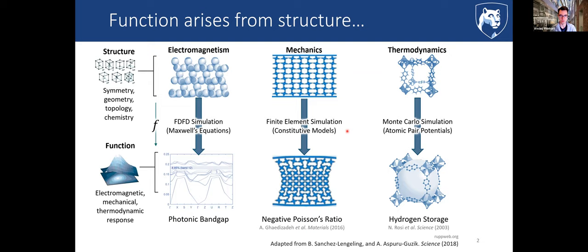For mechanics, we use finite element simulations or compressive and tensile testing to evaluate things like modulus or Poisson's ratio, getting cool properties like auxetic materials with negative Poisson's ratio. With thermodynamics, we can postulate some structure and simulate it with methods like Monte Carlo to evaluate properties like propensity for hydrogen storage. This forward direction — taking a structure, putting it into a physics-based model, and obtaining a response — is straightforward and very well studied.